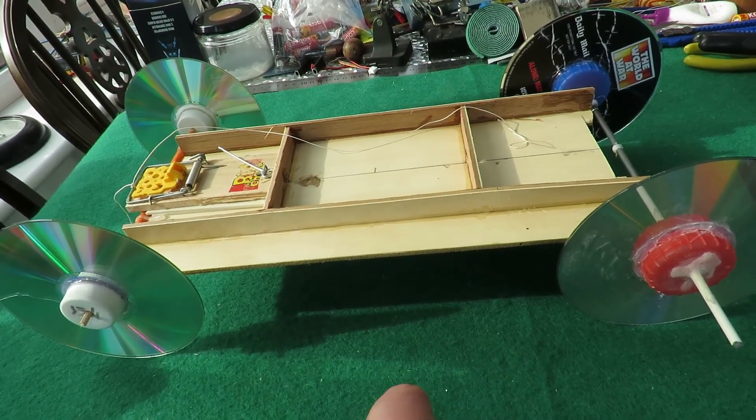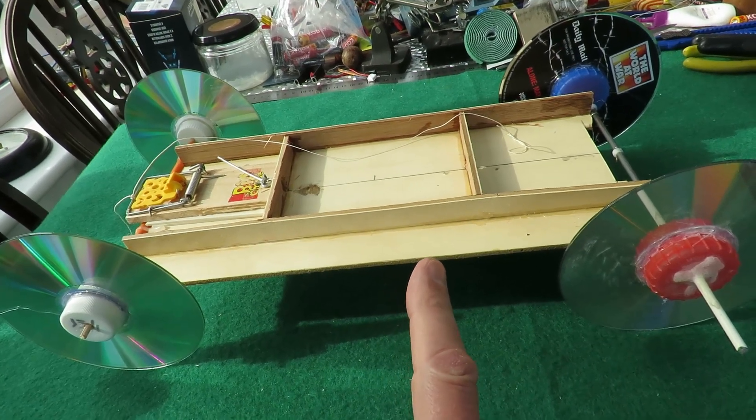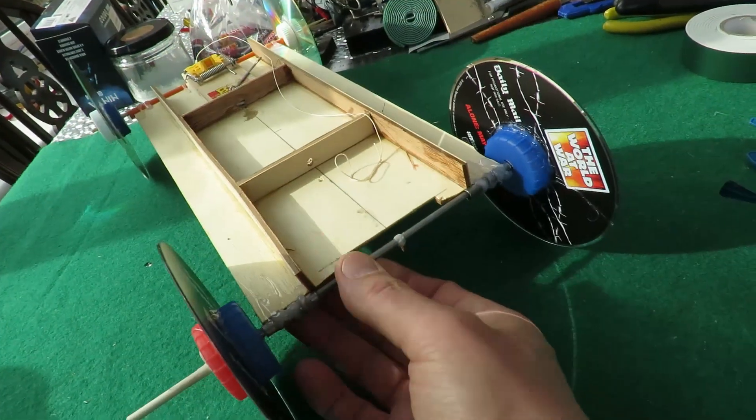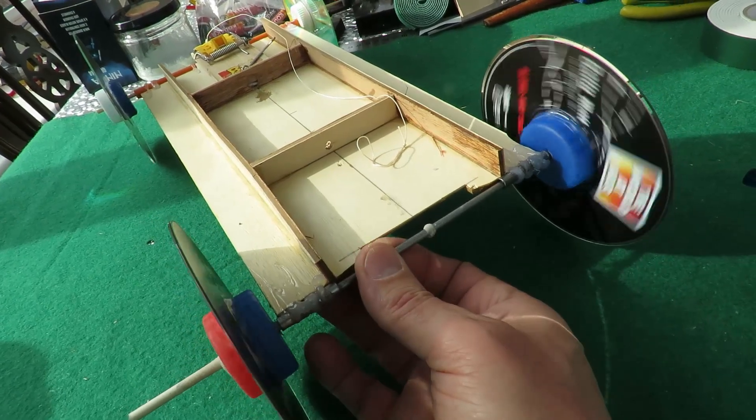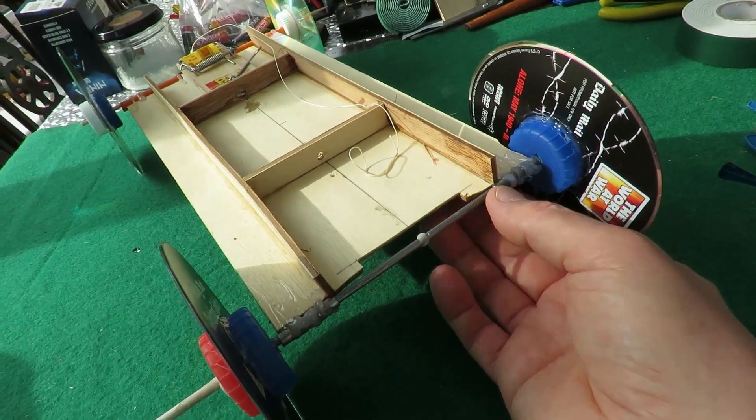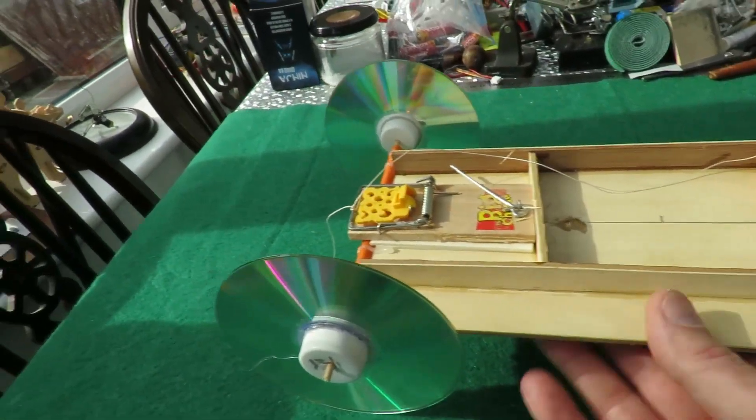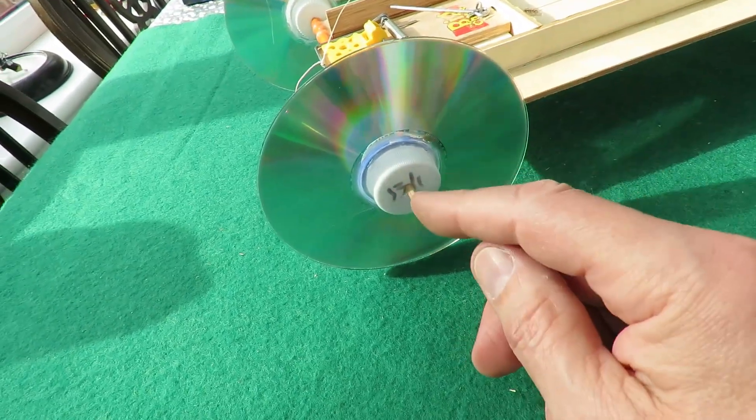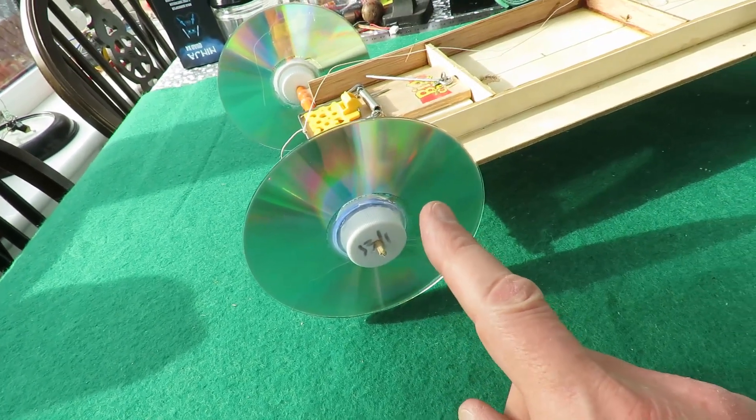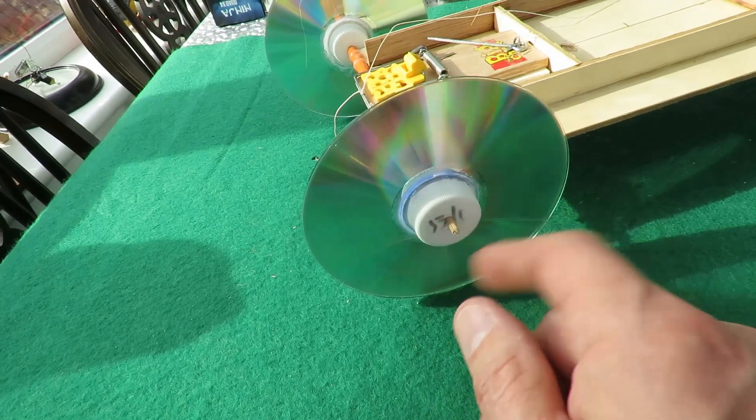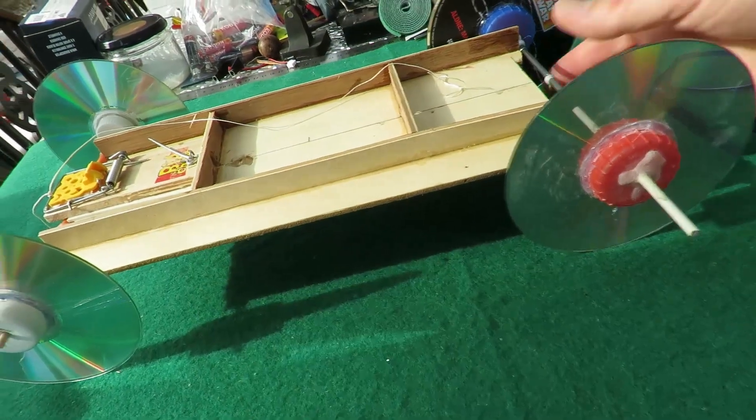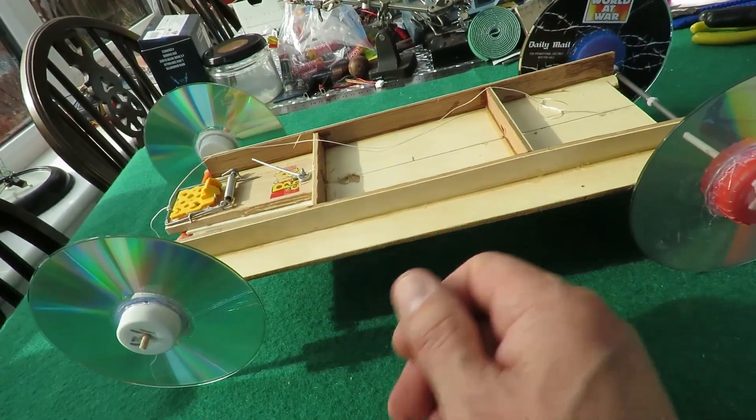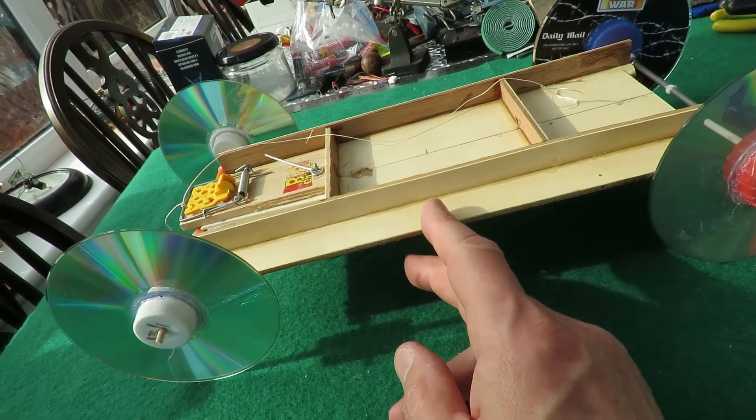So this is thin plywood. The back axle is actually a steel rod and it's in steel tubes hot glued to the wood. Front axle tube is just a drinking straw. Front axle is a barbecue skewer. Wheels are CDs with plastic bottle caps hot glued in the middle for hubs. And I've used this on quite a few different projects because it's just convenient, and rather than throw it away I've kept it.